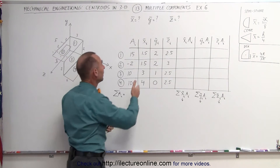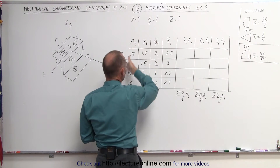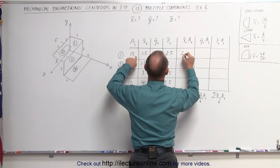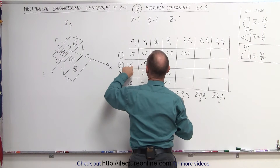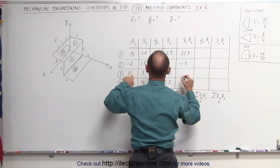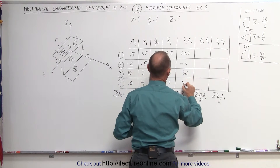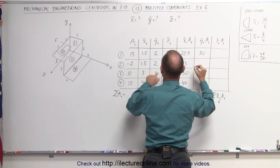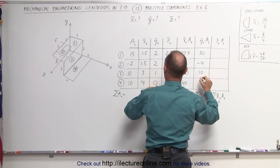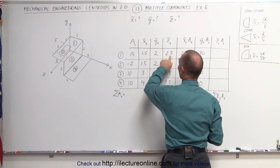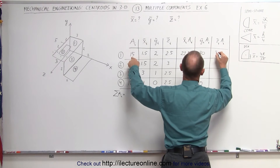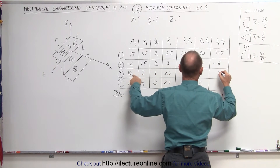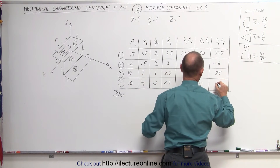Now we're going to multiply the x-coordinate times the area, the y-coordinate times the area, and the z-coordinate times the area to find the products. 1.5 times 15 is 22.5; 1.5 times negative 2 is negative 3; 3 times 10 is 30; and 4 times 10 is 40. For the y-coordinates times the area: 30, negative 4, 10, and 0. For the z-coordinates: 2.5 times 15 is 37.5; 3 times negative 2 is negative 6; 2.5 times 10 is 25; and 2.5 times 10 is 25.